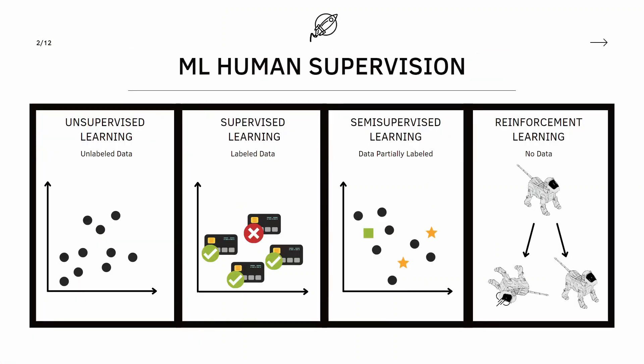We have these main types of machine learning when keeping in mind its human supervision: unsupervised, supervised, semi-supervised, and lastly reinforcement learning.